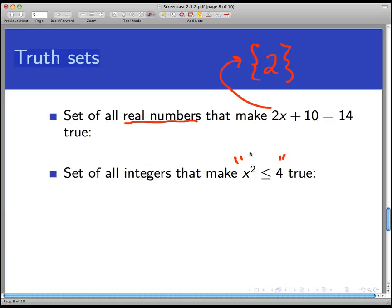By the same token, if I look at the inequality x² ≤ 4, what is the set of all variable values that make this true? Now notice here I'm changing the universal set to be integers. So I want to only think about whole numbers, positive, negative, 0, whole numbers. What is the set of all integers that makes this inequality true?